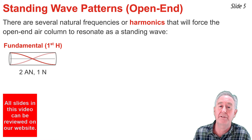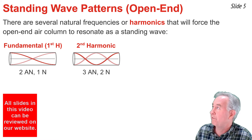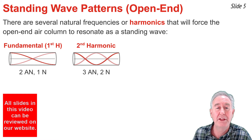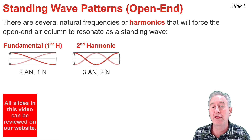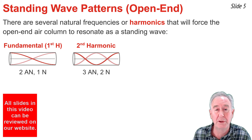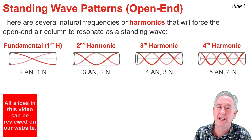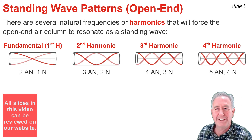To create the standing wave pattern for the second harmonic, you have to add an antinode and a node. So there will be three antinodes in all — one on each of the open ends and an antinode in the exact center of the air column — and two nodes in the pattern. To create the pattern for the third and fourth harmonic, you add an additional antinode and node each time. So for the third harmonic there are four antinodes and three nodes, and for the fourth harmonic there are five antinodes and four nodes, as shown in the diagrams.